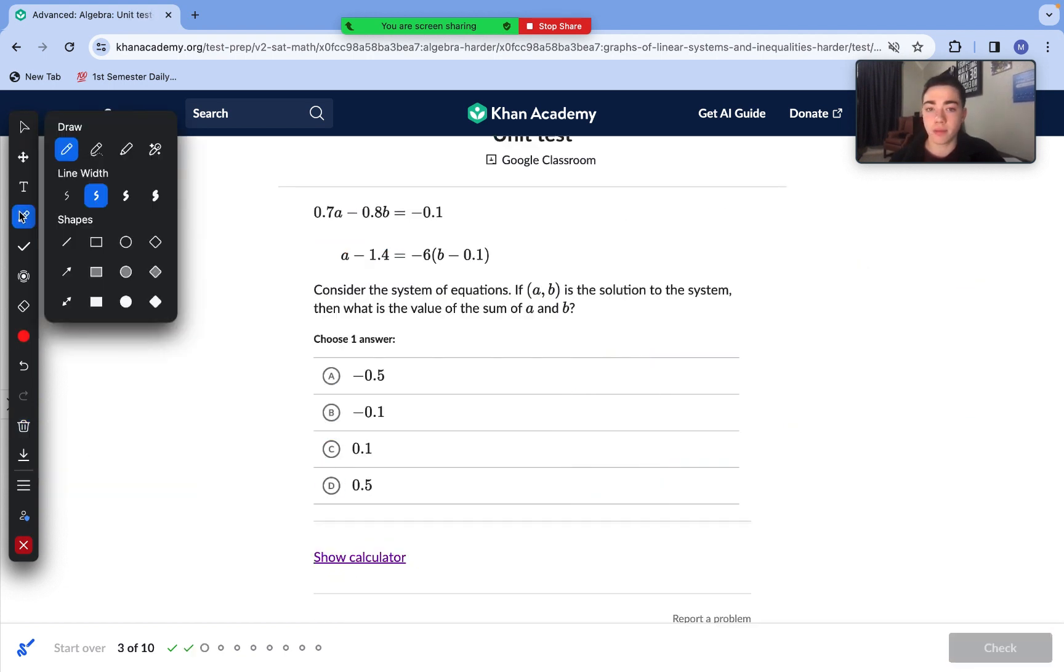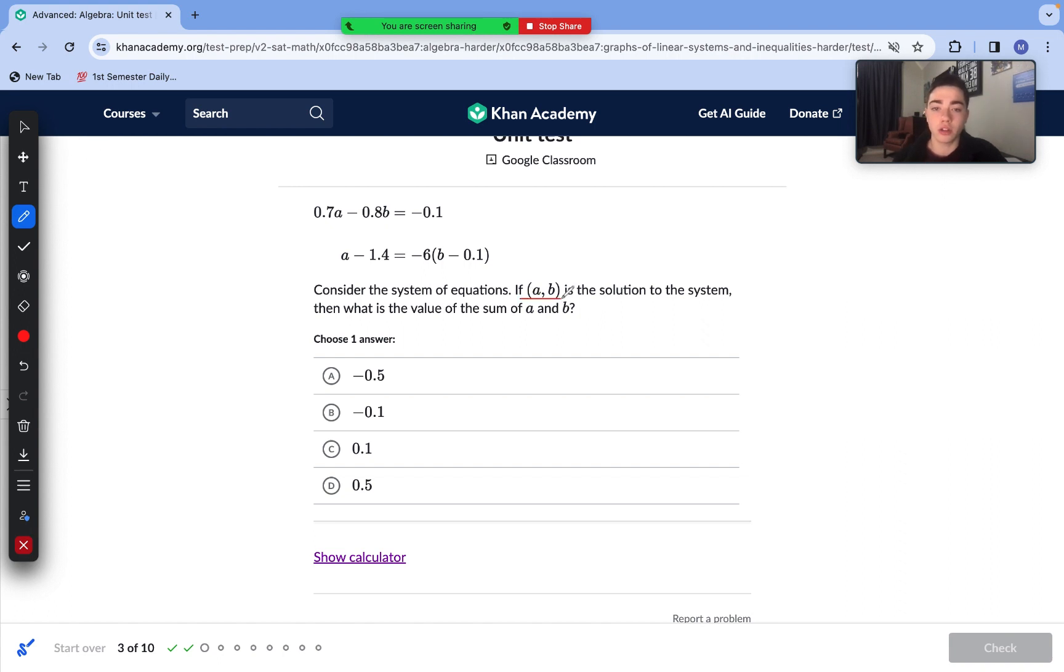Moving on to question number three here. We have a system of equations and we're trying to find the solution and then add our solution coordinates together to find our answer. Given that this first equation is in standard form and our second equation is super easy to isolate the a, that's exactly what I'm going to be doing here. I'm going to be using substitution to isolate the a in the second equation so we can substitute it into this first equation right here. So isolating our a, we just add 1.4 to each side on that bottom equation and I'm going to distribute that negative 6. So now we have a = -6b + 0.6 + 1.4. We can combine like terms: 0.6 + 1.4 is 2. So a = -6b + 2.